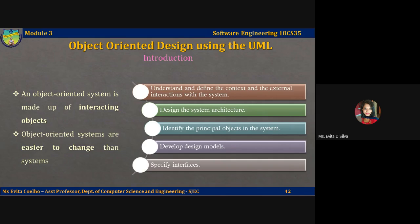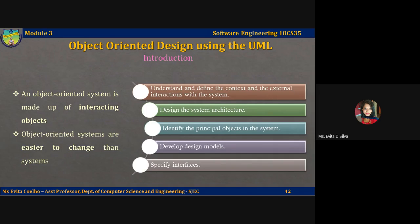Objects can include data and operations to manipulate the data. They may therefore be understood and modified as stand-alone entities. That is, changing the implementation of an object or adding additional operations or services to an object will not affect other system objects. Because objects are associated with things, there is often a clear mapping between real-world entities, such as hardware components, and their controlling objects in the system.